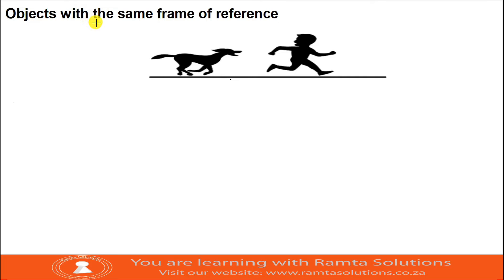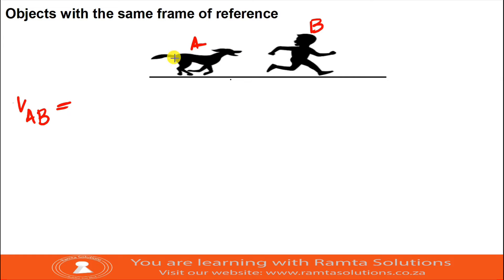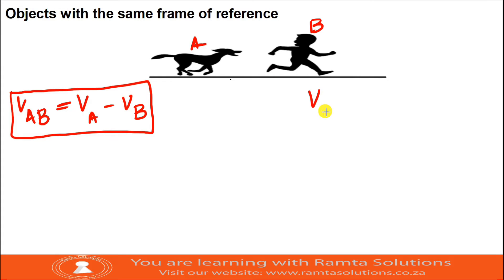Now we're looking at objects with the same frame of reference. We have two objects: I'll call the dog A and the boy B. Their frame of reference is the ground — they are sharing the same frame of reference. When we want to find the velocity of the dog relative to the boy, it is velocity of the dog minus velocity of the boy.